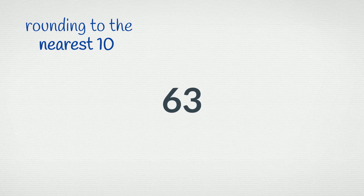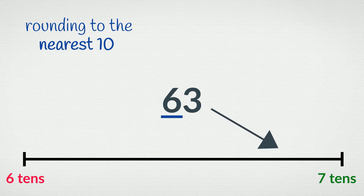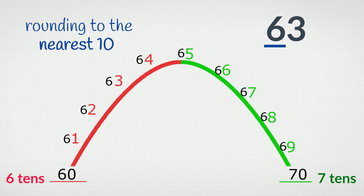Rounding to the nearest 10. Take the number 63. Because we're rounding to the nearest 10, we first of all find the tens in our number. 63 is somewhere between 6 tens and 7 tens. To round it to the nearest 10, we need to decide if it's nearer to 6 tens or 7 tens. We can see from this diagram that 63 is closer to 6 tens — 60. So 63 rounds down to 60.